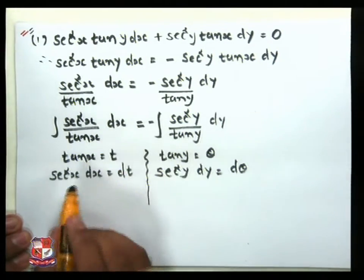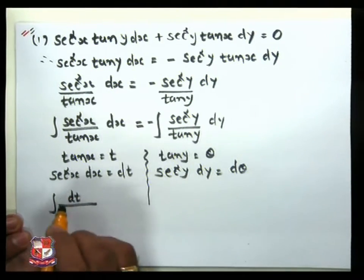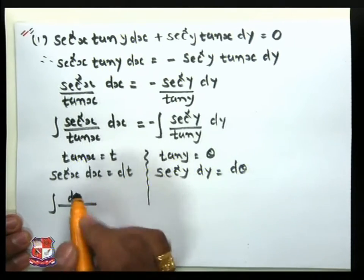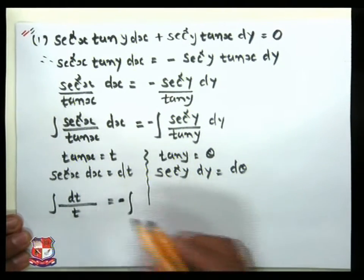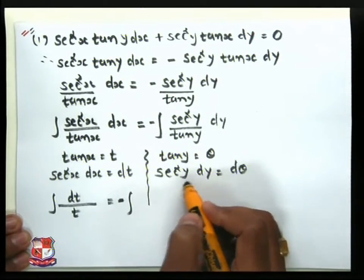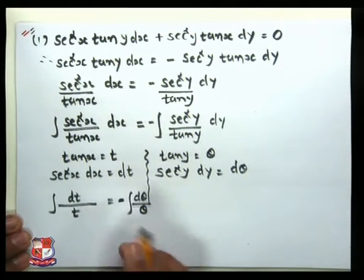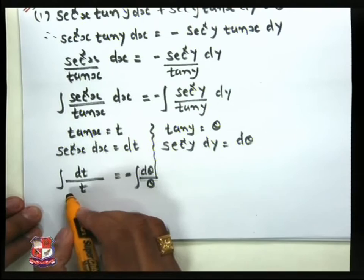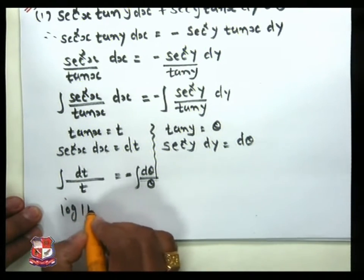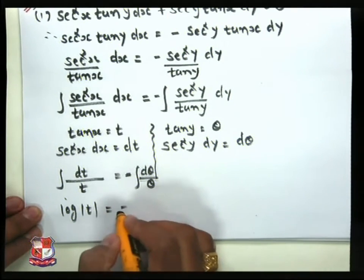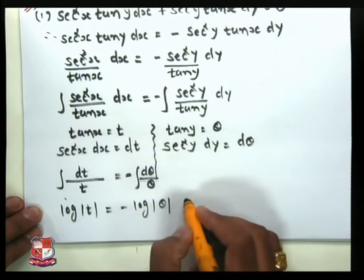Applying the substitution: sec²x dx becomes dt, divided by tan(x) replaced by t. On the right side, with the minus sign, sec²y dy becomes dθ divided by tan(y) replaced by θ. So the next step gives us the integral of 1/t dt = −∫1/θ dθ, and by the rule of integration, ∫1/t = log|t|.